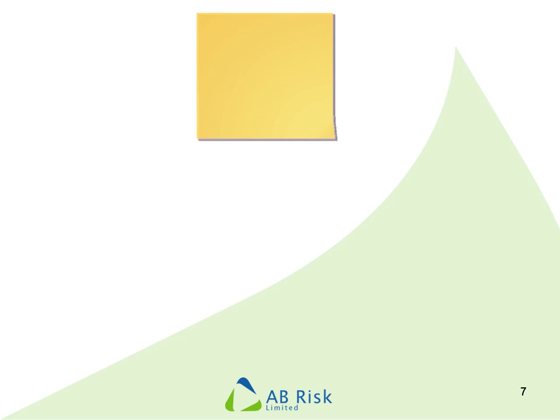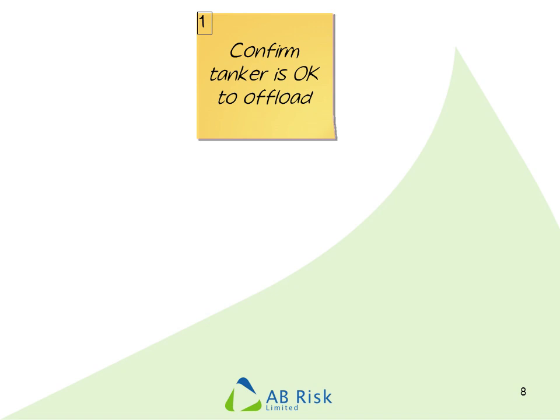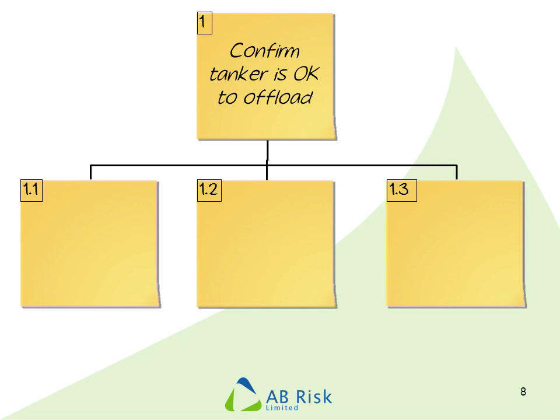In other cases, we may come to do our HEA and find that the information we've got about the task doesn't quite stack up. For example, number one on our task analysis was 'confirm the tanker is okay to offload.' We can see it's a check step, but when we go through it, every type of check error can occur, and it makes us wonder: what's this check there for? Is it to check the physical condition of the tanker, the paperwork, the competency of the driver, the integrity of the hose? This may prompt us to think that when we did our original analysis or wrote our original procedure, we didn't go to the level of detail we should have. So HEA is a good check to make sure our task analyses and procedures are going to the level of detail that's really needed.